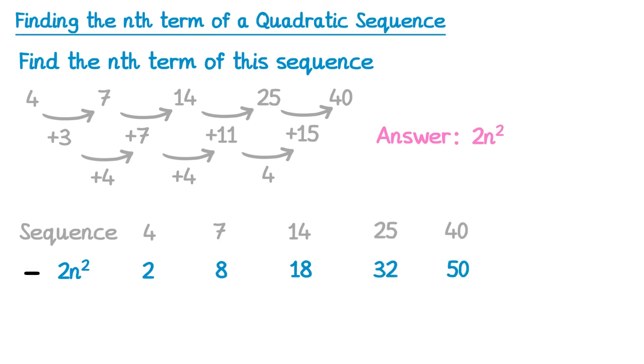We then subtract, so the sequence take away 2n squared. 4 take 2 is 2, 7 take 8 is negative 1, 14 take 18 is negative 4, 25 take 32 is negative 7, and 40 take 50 is negative 10.